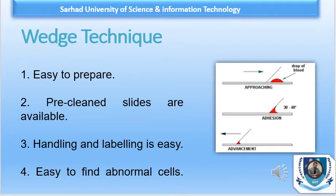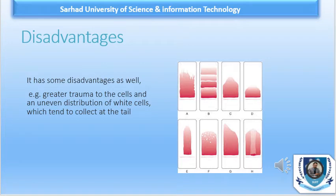Blood films prepared on glass slides are preferred because they have several advantages. First, they are easy to prepare. Second, pre-cleaned slides are available all the time. Third, handling and labeling is very easy. Fourth and most importantly, it is easy to find abnormal cells, as these tend to collect at the tail and on the edge of the film. That is why we use this technique in all laboratories.